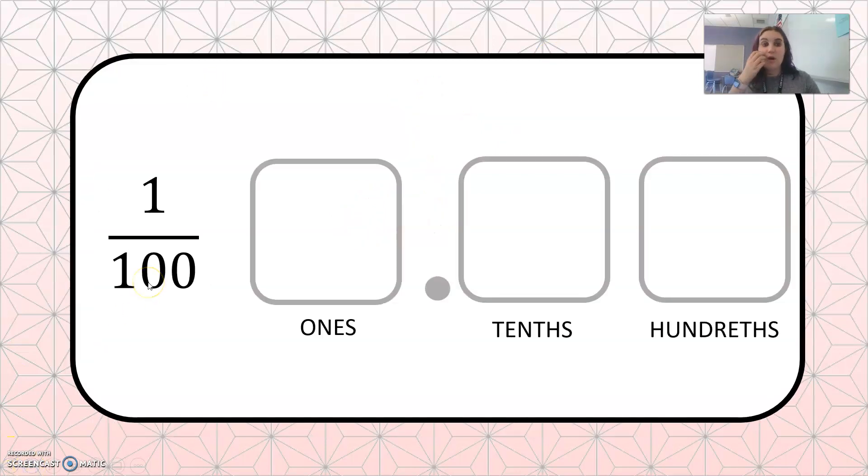Now we have 1 hundredth. So I'm going to look at my place values. I have the tenths and then the hundredths. So we're moving to the hundredths place where I have 1. And then we're going to put zeros in the tenths and the ones place to hold the place values. So this is read as 0.01. Some people will say it like that, but it's really good to say one hundredth. 0.01, one hundredth.